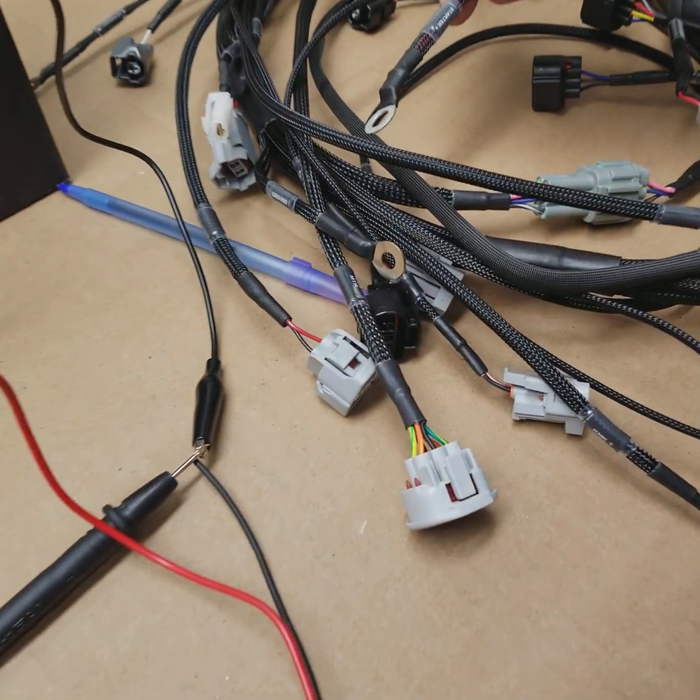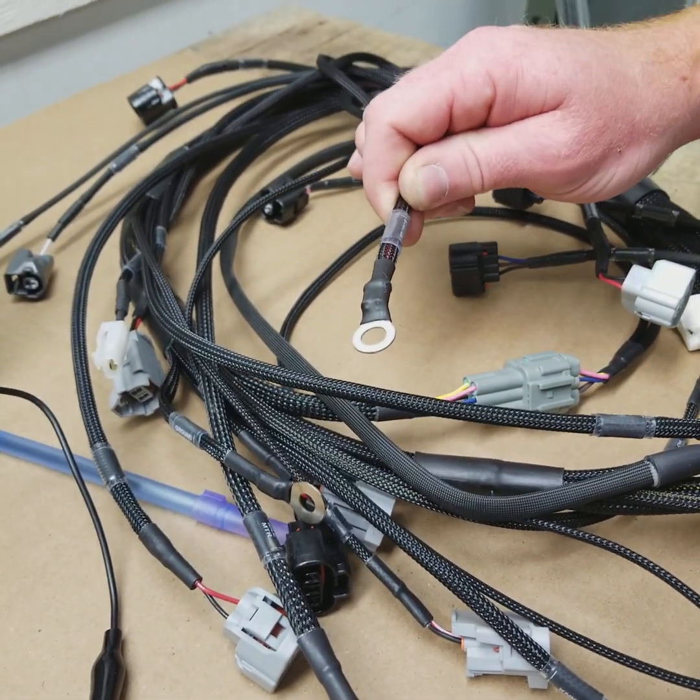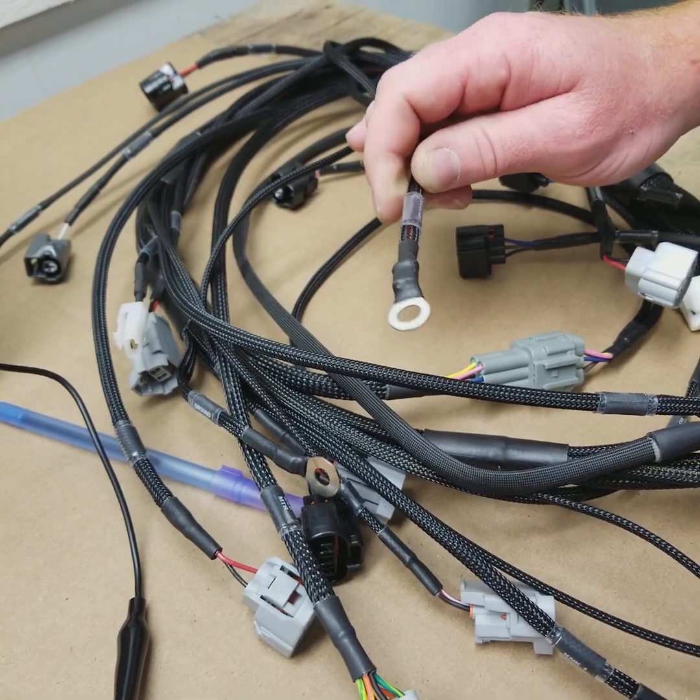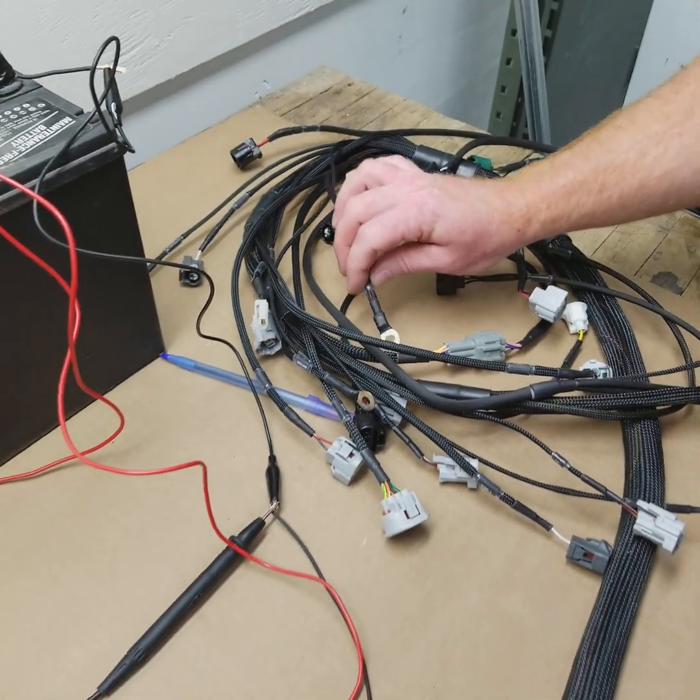We've got starter power here. It's a ring terminal. It's going to go on the battery positive stud on your starter. You do still need to supply the starter with 12 volts from the battery. So that's where our harness picks up power.